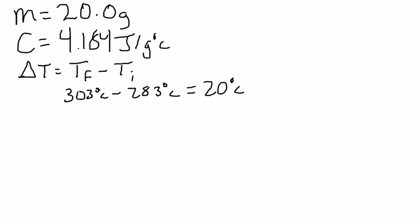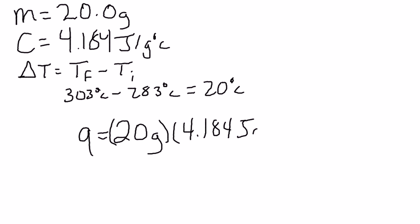Now, all we need to do is plug in our variables. So Q equals a mass of 20 grams times the specific heat of water, 4.184 joules per gram degrees Celsius, times our change in temperature, which was 20 degrees Celsius.